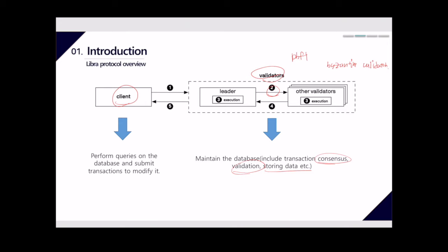In step two, validator leaders propose transactions from clients or other validators. All validators execute the transaction and form an authenticated data structure containing the new ledger history. The validator data structure is formed as part of the consensus protocol, and the consensus protocol outputs a signature on the full state of the database at version I.